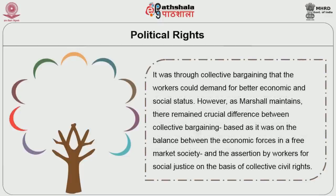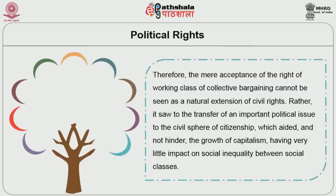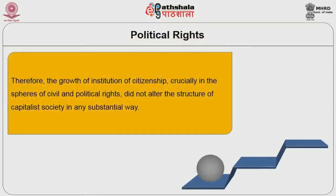It was through collective bargaining that workers could demand better economic and social status. However, as Marshall maintains, there remained crucial differences between collective bargaining, based as it was on the balance between economic forces in a free market society, and the assertion by workers for social justice on the basis of collective civil rights. Therefore, the mere acceptance of the right of the working class to collective bargaining cannot be seen as a natural extension of civil rights. Rather, it sought to transfer an important political issue to the civil sphere of citizenship, which aided and not hindered the growth of capitalism, having very limited impact on social inequality between social classes. Therefore, the growth of institutions of citizenship, crucially in the spheres of civil and political rights, did not alter the structure of capitalist society in any substantial way.